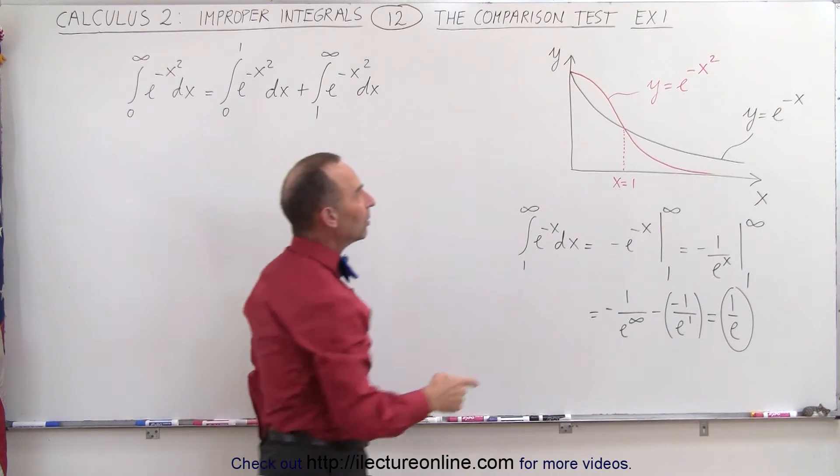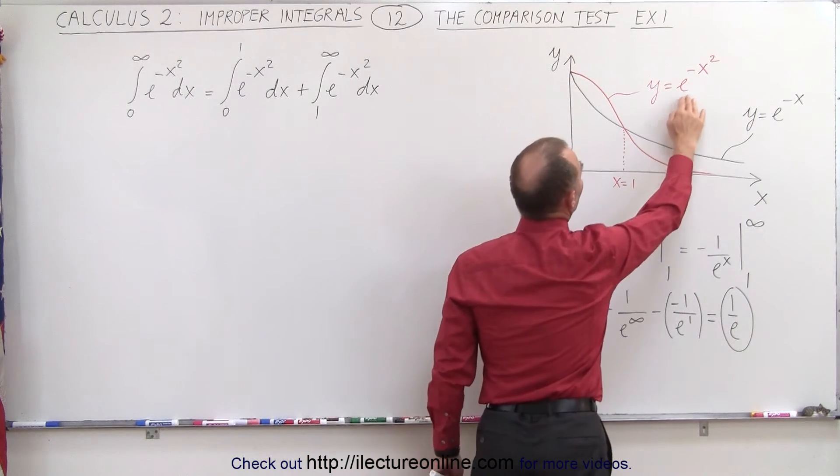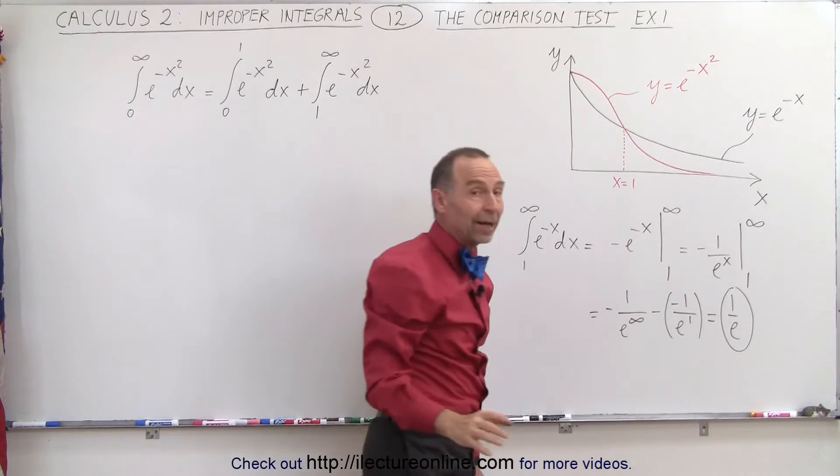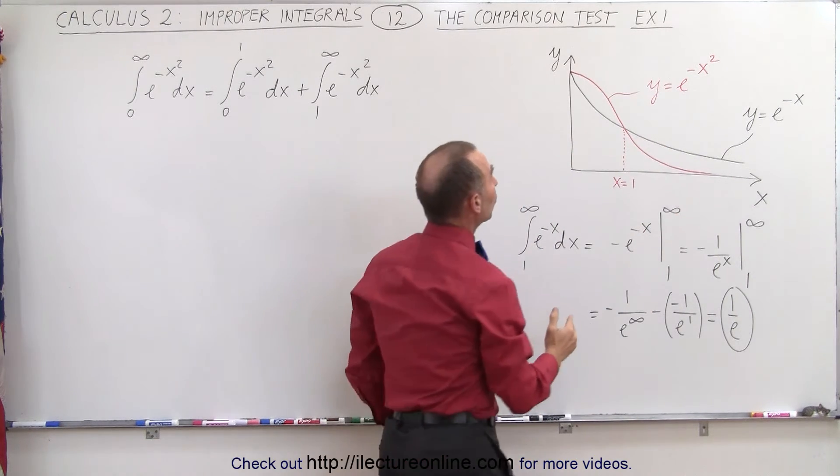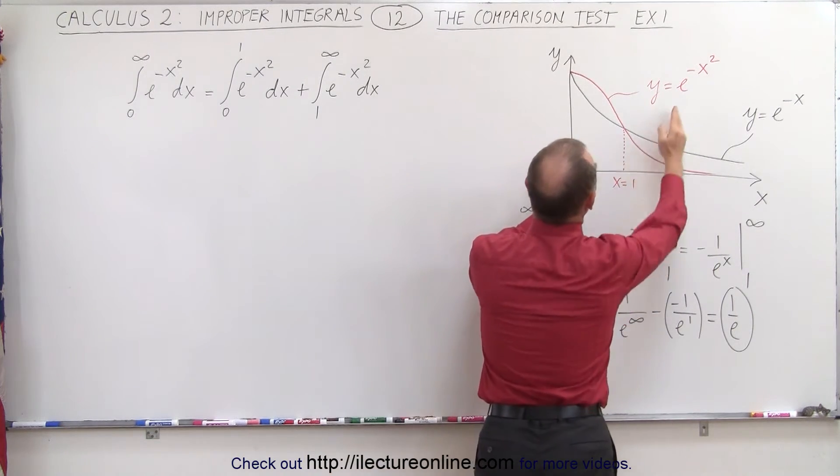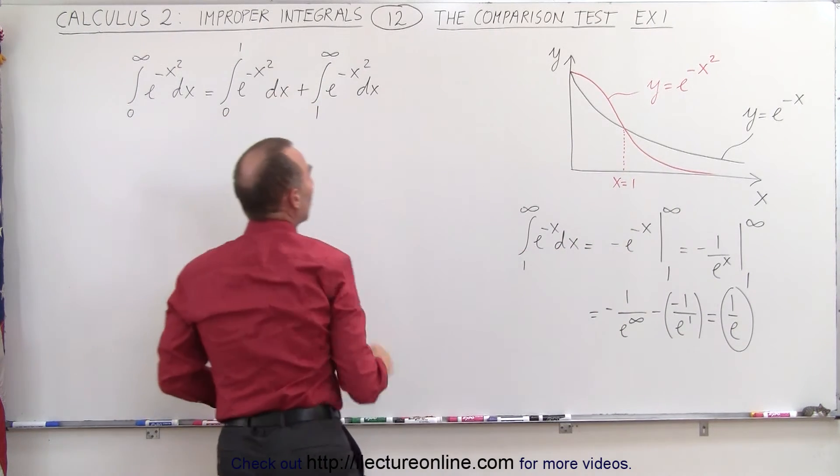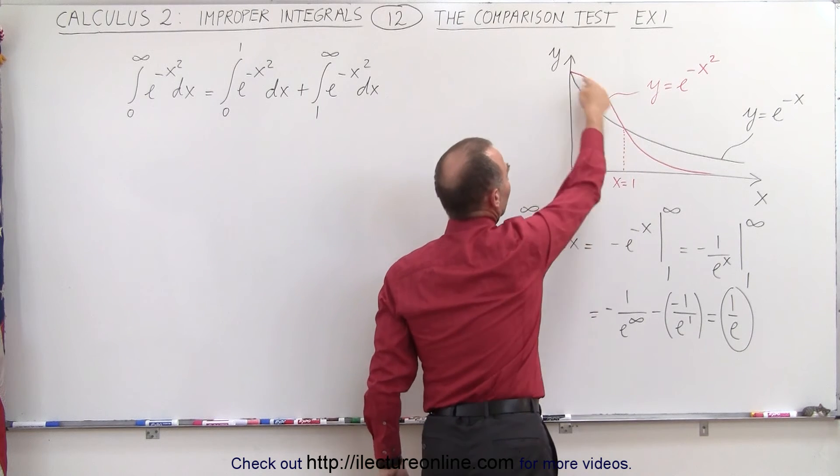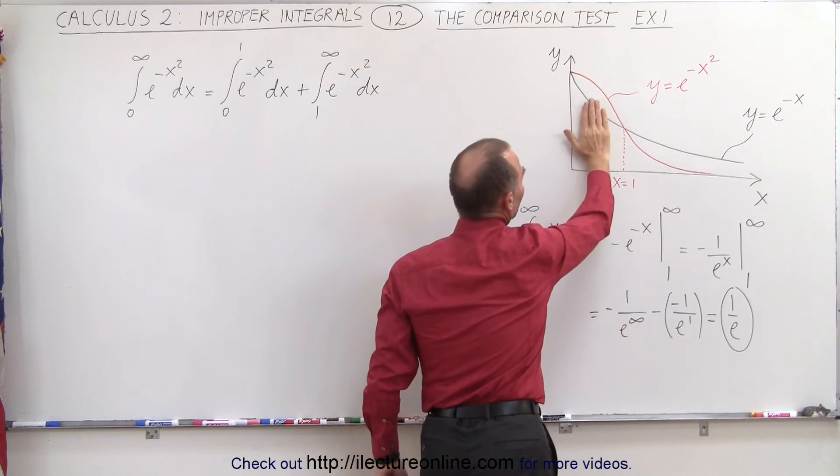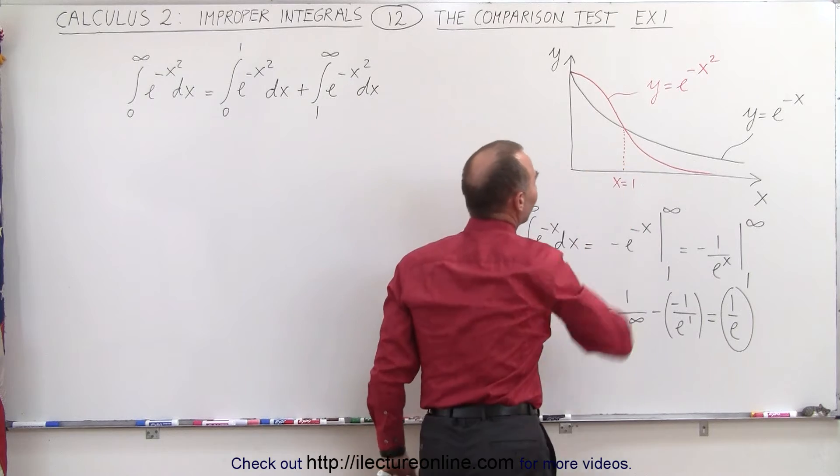Now, when we evaluate our other function, y equals e to the minus x squared, which will be much more difficult to integrate, what we can assume is that when we integrate this function from 0 to 1, which is this integral right here, we will get some finite value. That's quite clear by the graph that this area here is indeed a finite value.